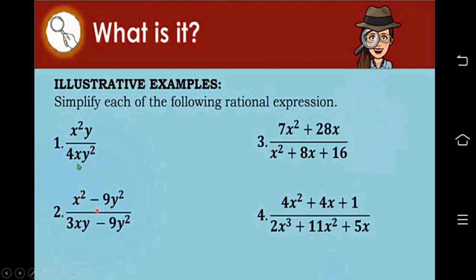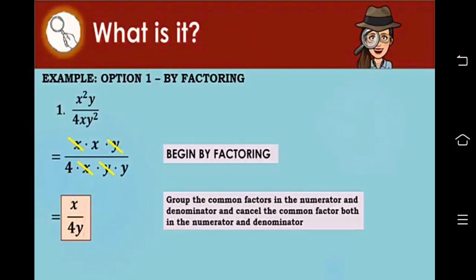Here are examples of rational expressions: x squared y over 4xy squared; x squared minus 9y squared over 3xy minus 9y squared; 7x squared plus 28x over x squared plus 8x plus 16; and 4x squared plus 4x plus 1 over 2x cubed plus 11x squared plus 5x. Let us work on example number 1: x squared y over 4xy squared. We begin by factoring. The factors of x squared y are x times x times y. For 4xy squared, that's 4 times x times y times y. We factor out x and y from both numerator and denominator. What's left in the numerator is x and in the denominator are 4 and y, giving us x over 4y.